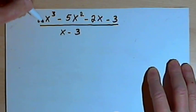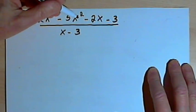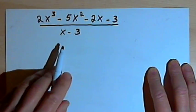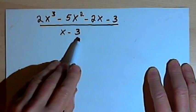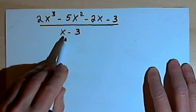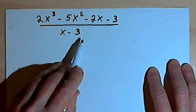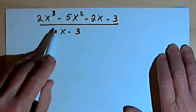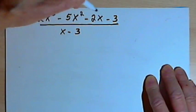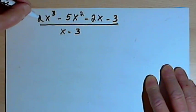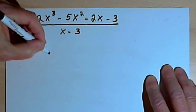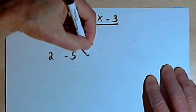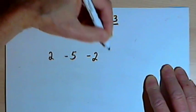Here's the first problem. I've got this polynomial, 2x to the third minus 5x squared minus 2x minus 3, and I want to divide that by the binomial x minus 3. Instead of doing this by algebraic division or polynomial division, I'm going to show you how to do the synthetic division version of it. The first thing I do is take that polynomial and just copy down the coefficients. So that's going to be a 2, a negative 5, a negative 2, and a negative 3.